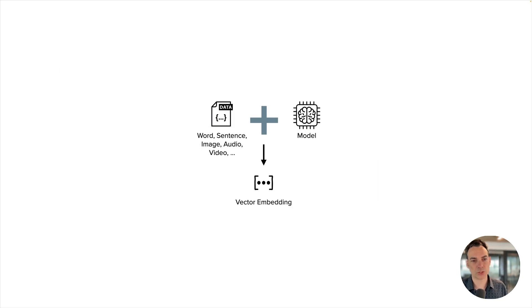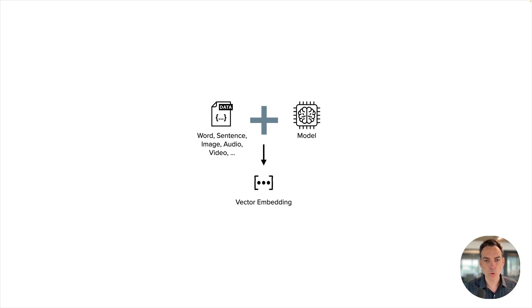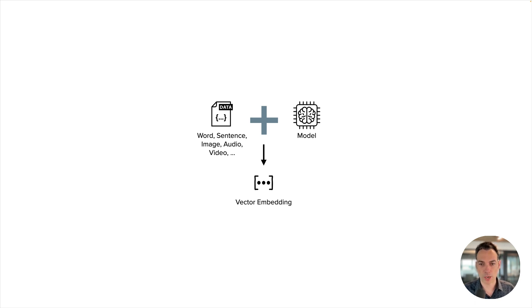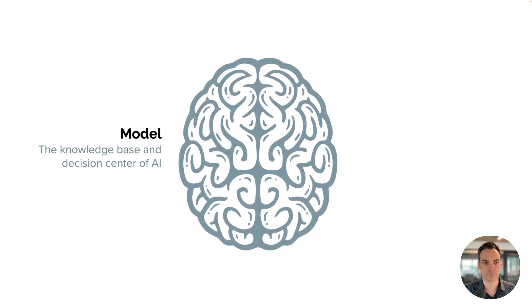While embeddings are the internal data structure of deep learning algorithms, they can also be the outputs — which is how most of us, not creating these systems but simply using them, will interface with embeddings. You pass some data input to a model and the model transforms it into something it can natively understand: that's the vector embedding. And sometimes it's worth storing off this representation of the data.